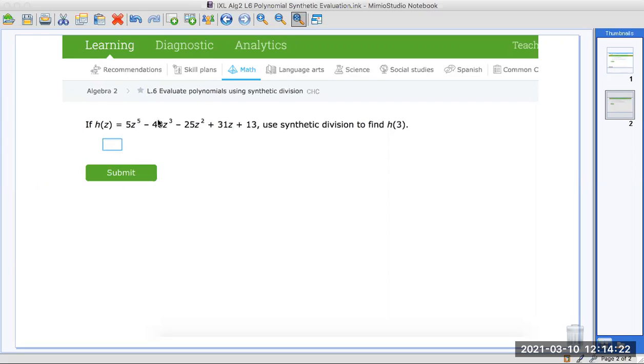You start out by looking for any missing terms. It jumps from 5 to 4, so there's a missing term. And you're going to use the coefficients: 5, leave a little room, 0 for the missing term, negative 40. Then comes 2, negative 25.